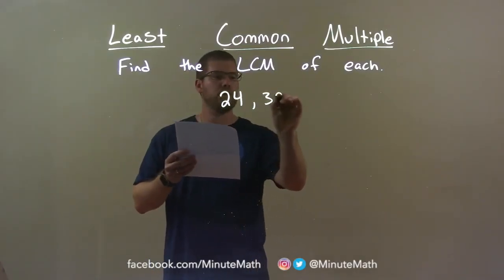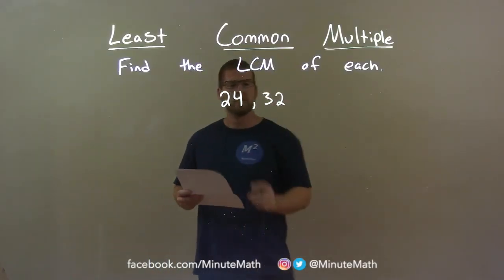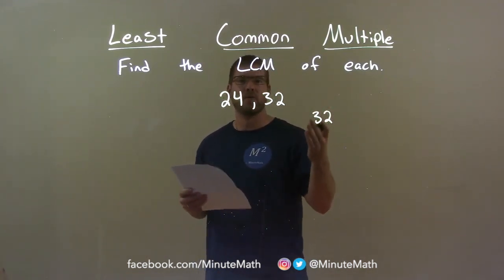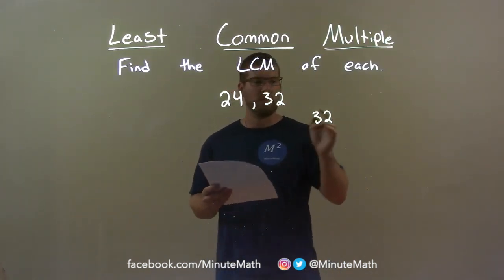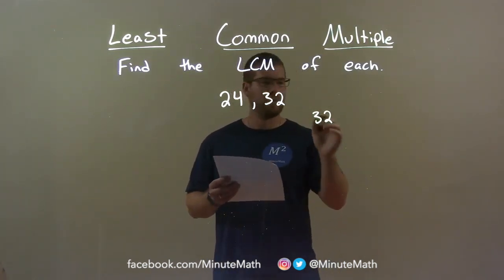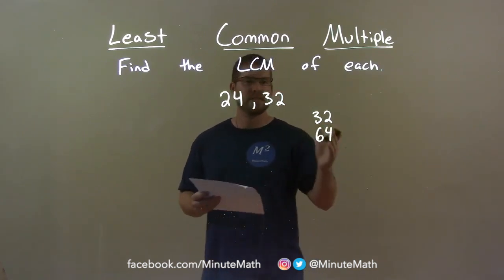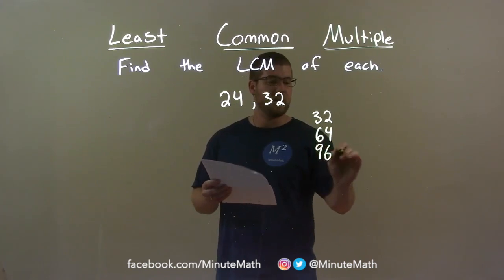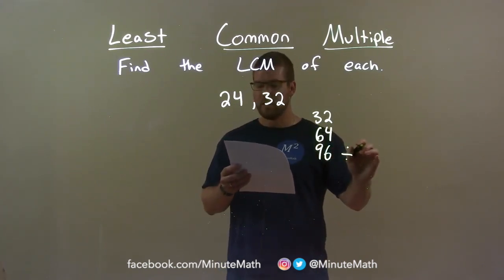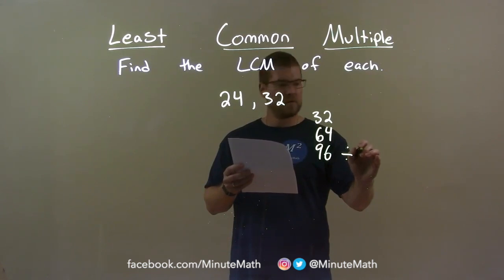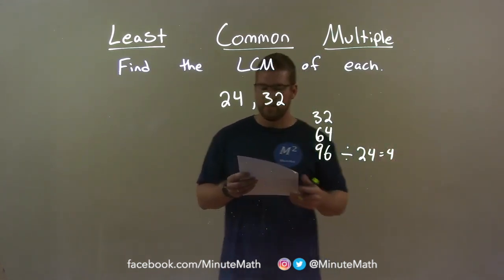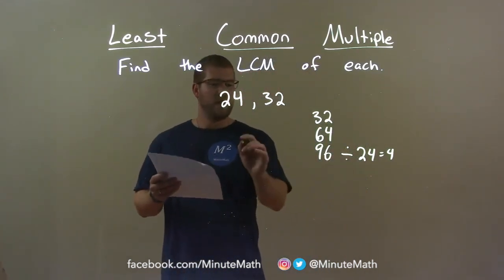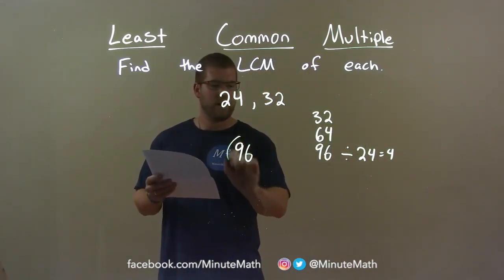24 and 32. I take the larger of the two numbers, 32, and find its multiples, trying to see if that multiple can be divided by 24. 32 cannot be divided by 24. The next multiple is 64, which cannot be divided by 24 evenly, so we have 96. 96 can be divided by 24 — 96 divided by 24 is 4. So 96 is my final answer.